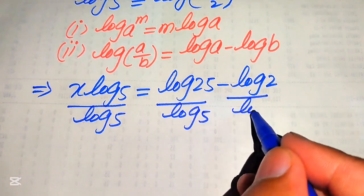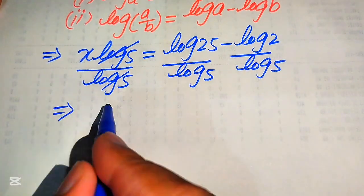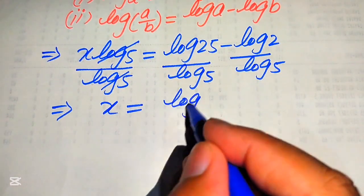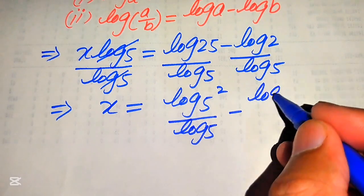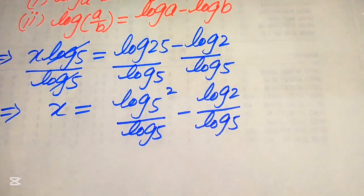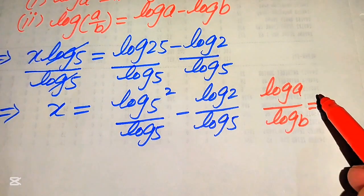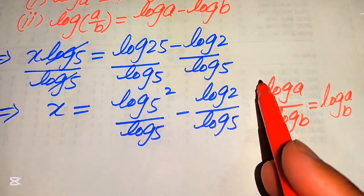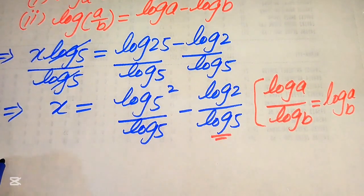After dividing by log of 5, we need some simplifications. This log 5 is cancelled out by this log 5, and on the left hand side we get x. On the right hand side, we rewrite 25 as log of 5 squared divided by log of 5, minus log of 2 divided by log of 5. We apply the change of base property: log of a divided by log of b equals log of a with base b.